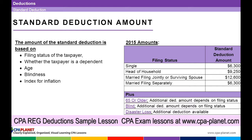Plus, if you're 65 or older, you get an additional deduction depending on filing status. If you're blind, you get an additional deduction depending on filing status. And if there's a disaster loss, there's an additional deduction. So this is your standard deduction — those amounts above — plus possibly additional ones for these three categories.